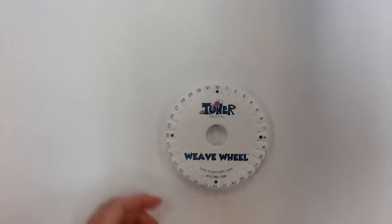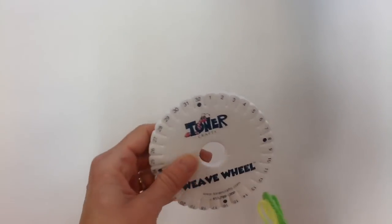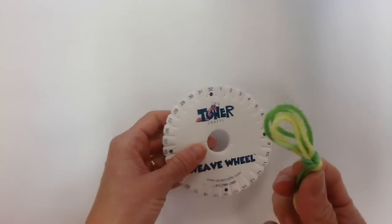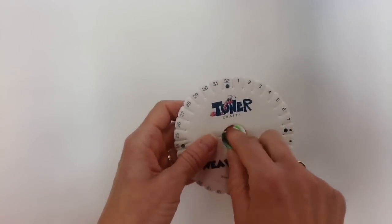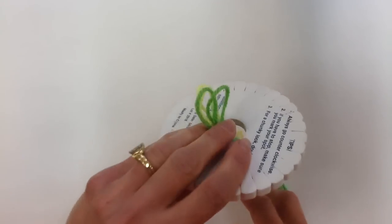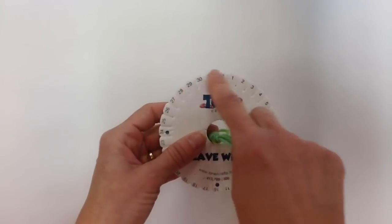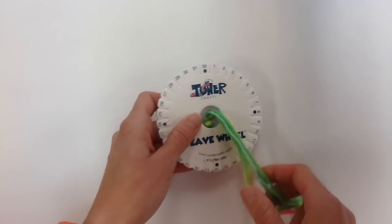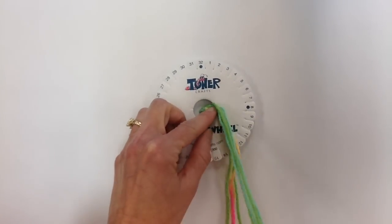Step three is getting the wheel set up. I'm going to take the knot that I just made and put it through the hole. Notice I can see the number side in front of me, so you want to be able to visibly see those number sides. Then I'm going to separate my colors.